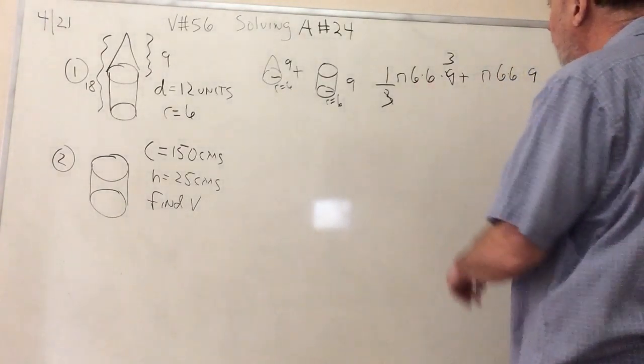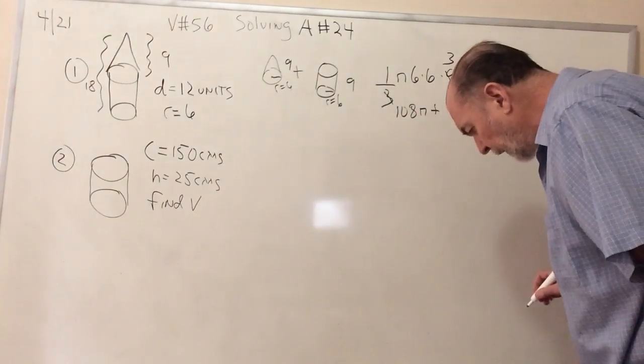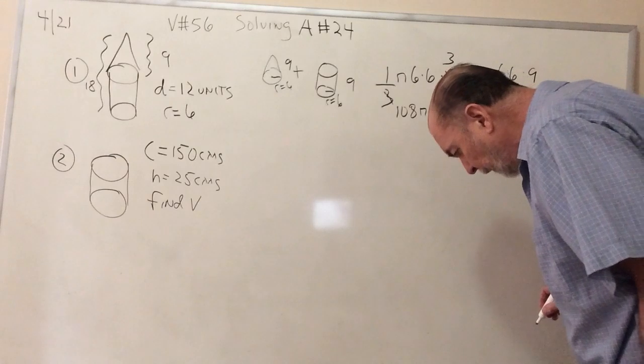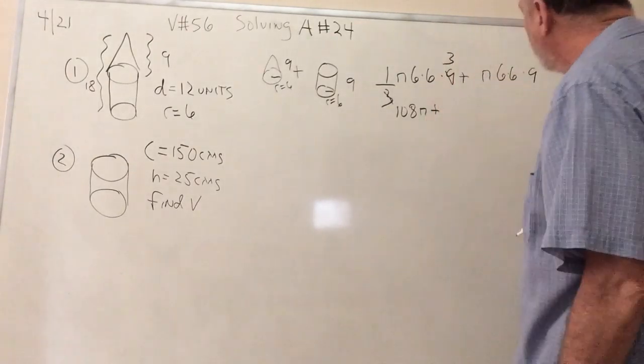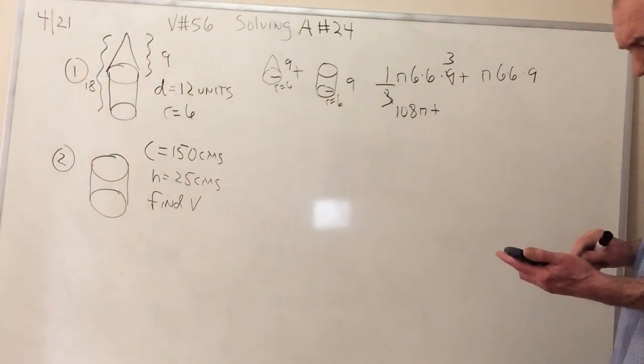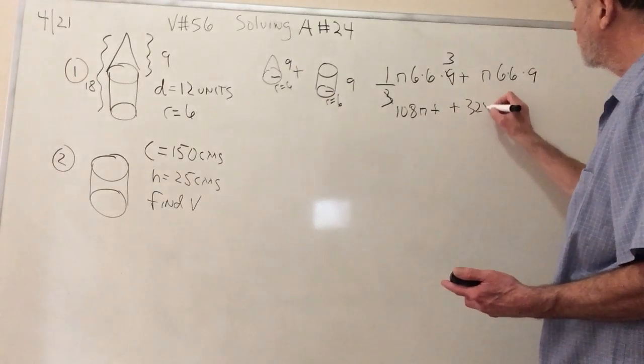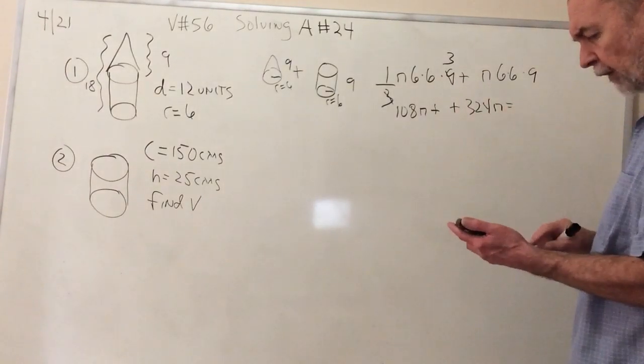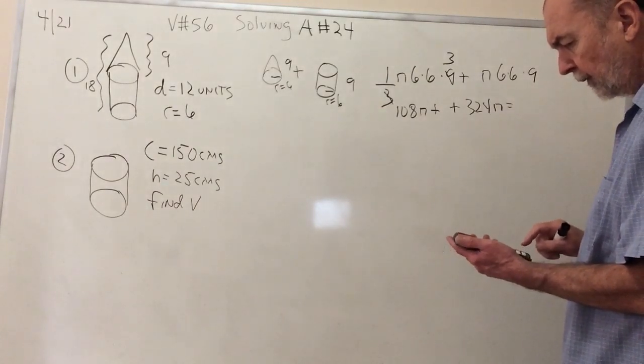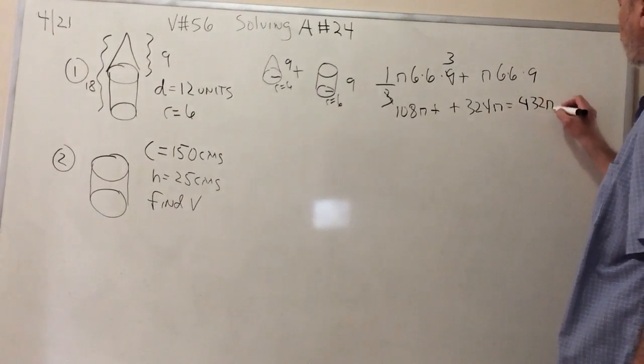So, 6 times 6 times 6 times 3 is 108 pi. That's been explained to you. And then 6 times 6 times 9 is, let's see, 6 times 6 times 9, what is that? That would be, looks like there's a mistake here. 6 times 6 times 9 is 324 pi.